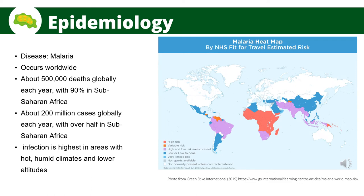Malaria is a disease that occurs worldwide. There are about 200 million cases globally each year, with over half in sub-Saharan Africa. Globally, about 500,000 deaths occur each year, with 90% in sub-Saharan Africa. Infection is highest in areas with hot, humid climates and lower altitudes. Malaria is common in the area south of the Sahara Desert, as the disease spreads almost entirely in poor regions with tropical and subtropical climates where local weather allows for transmission to occur year-round.